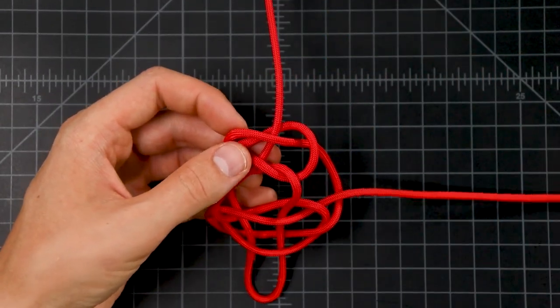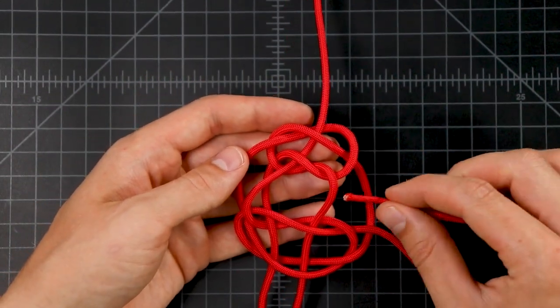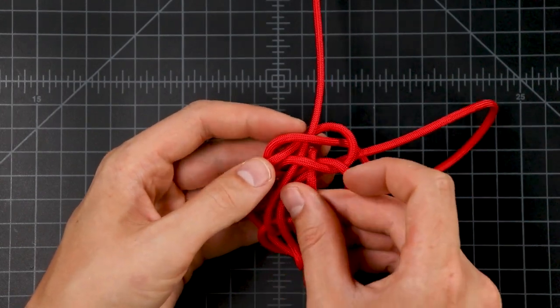Pull that all the way through, and then this other one we're going to do the same thing with, except this cord right here we want to go underneath first. And then just up through the middle, right alongside that other cord.